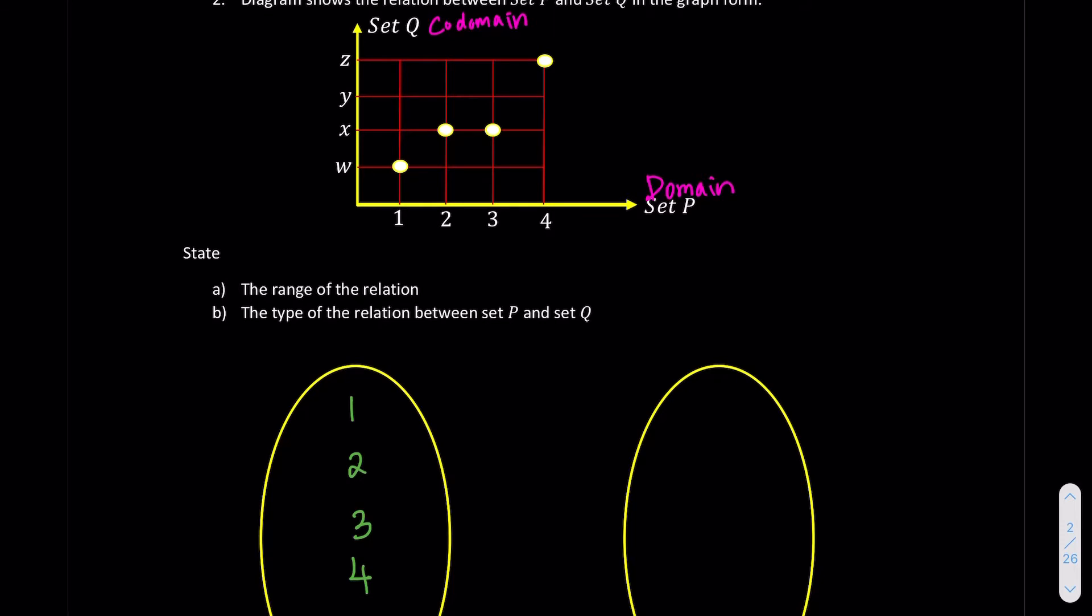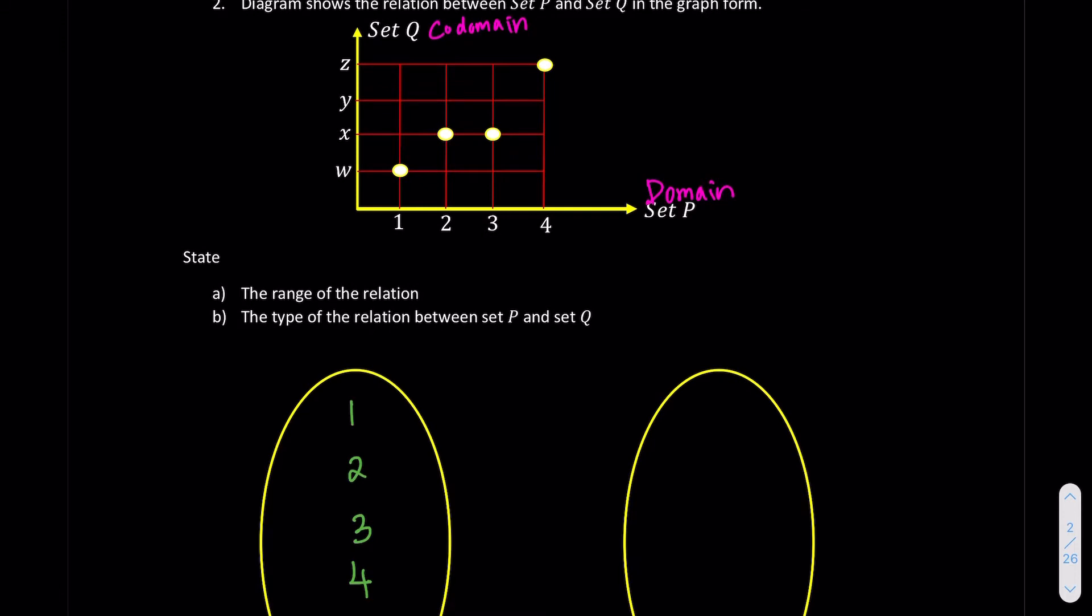The next one, we have the co-domain in the y-axis, which is z, w, x, y, and z. As we know, the first point here is 1w. So we try to link it up now. So it's 1w. So this is the first pairing. The second pairing is 2x. So we go for 2x. The third pairing is 3x. And the last pairing is 4z.